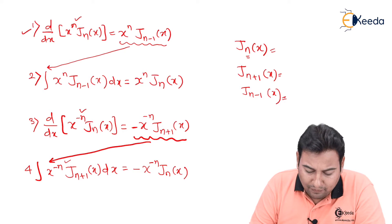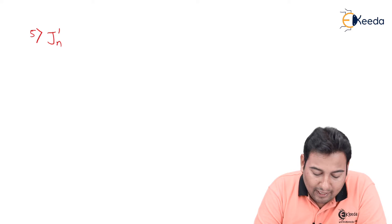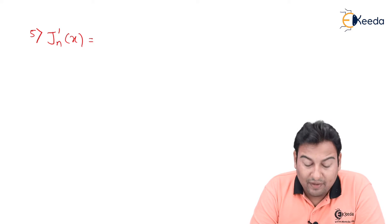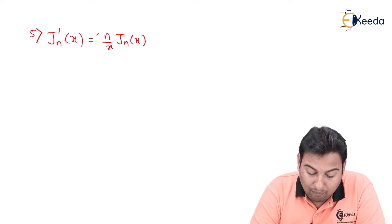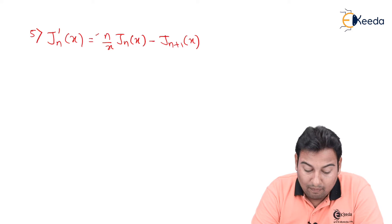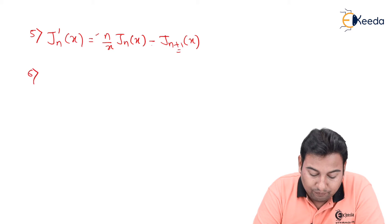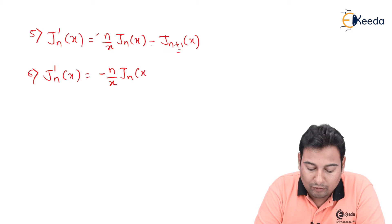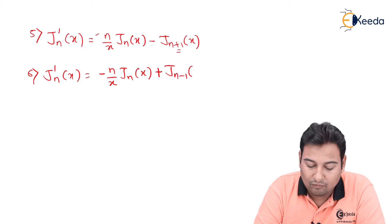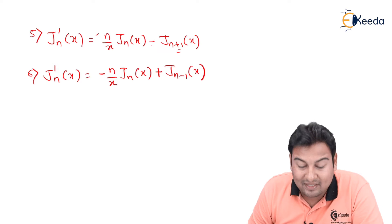There are 8 formulas. The fifth formula is: J'_n(x) = (n/x)·J_n(x) − J_{n+1}(x), with signs: plus, minus, plus. The sixth formula is: J'_n(x) = −(n/x)·J_n(x) + J_{n−1}(x), with signs: minus, plus, minus. Notice: the fifth has plus-minus-plus, and the sixth has minus-plus-minus.